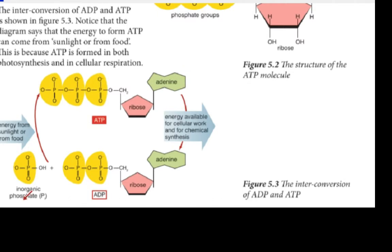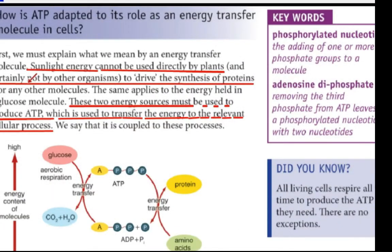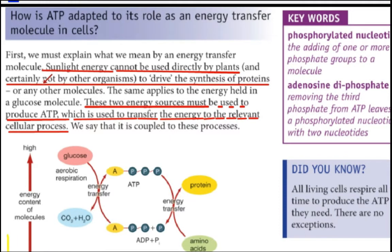The next step involves ADP and inorganic phosphate group. ADP combined with inorganic phosphate can form ATP. How is ATP adapted to its role as an energy transfer molecule in cells?